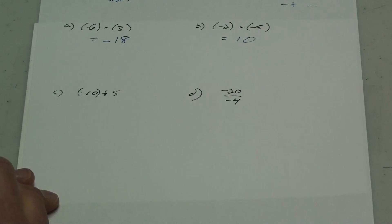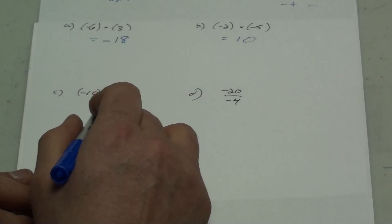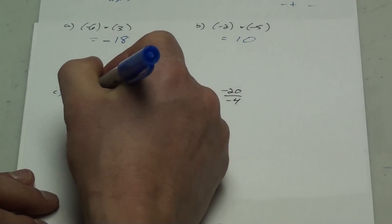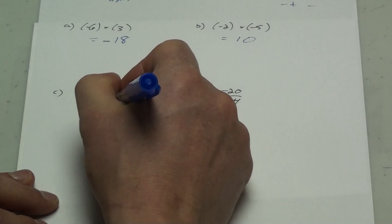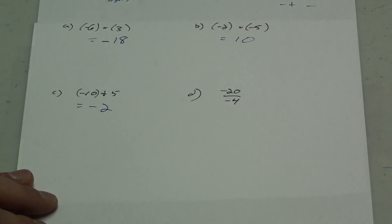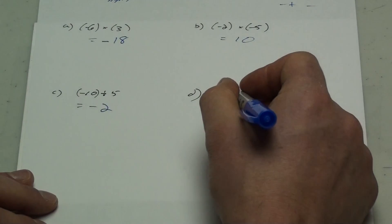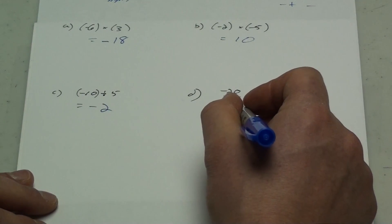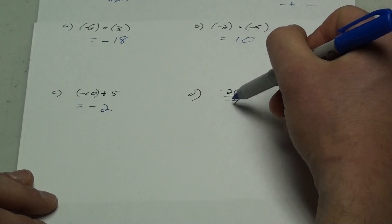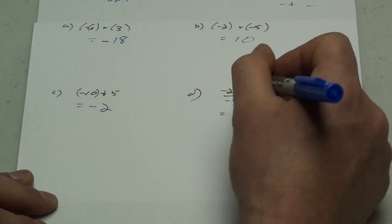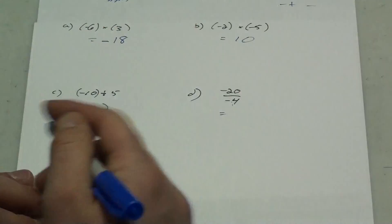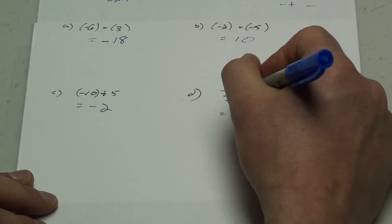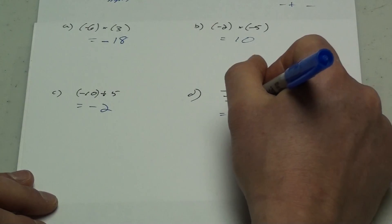Negative 10 divided by 5. Signs are different, so your answer is gonna be a negative. 10 divided by 5 is 2, so negative 2 is the answer. Negative 20 divided by negative 4. Signs are the same, so the answer is gonna be a positive. Two negatives make a positive. 20 divided by 4 is 5.